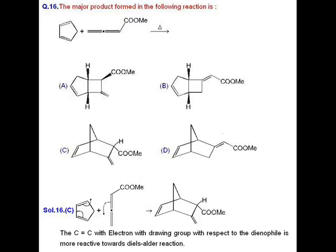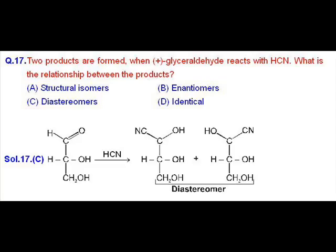Question number 16. It is a Diels-Alder reaction. We are using cyclopentadiene with an alkene type of compound which is functioning as a dienophile. When Diels-Alder reaction takes place, we get a product given in option C, which is a bicyclic compound and the given ester is correct. Question number 17.